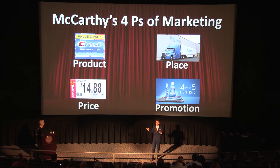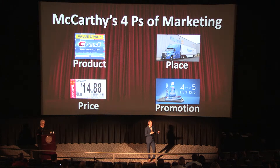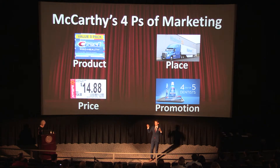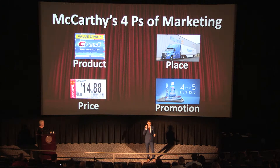Product is anything you might buy — your jacket, your tie, or toothpaste. Price is the amount of money that an organization will exchange for their product. Place refers to the complex distribution channels that bring a product from development all the way to you in the stores, and promotion is the work that a company does to try to persuade you to buy their product.